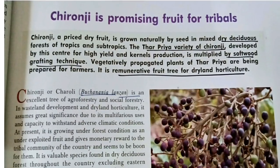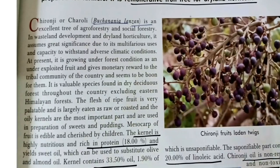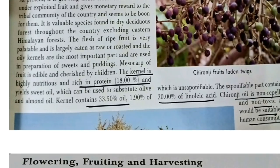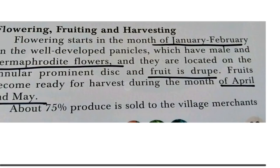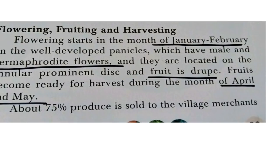Chironji has the scientific name Buchanania lanzan and belongs to family Anacardiaceae, the same family as cashew and mango. Its kernel is a rich source of protein at 18%, oil at 33.5%, and linoleic acid at about 20%. It is suitable for human consumption as it is non-repellent and non-toxic. Its flowering time is January-February, flowers are hermaphrodite, fruit is a drupe type, and harvesting is in April-May.